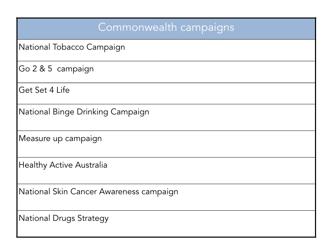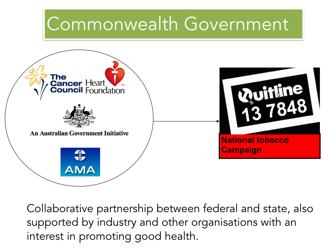Some key commonwealth campaigns include the national tobacco campaign, the national binge drinking campaign, and the national drug strategy, amongst many others. The commonwealth government works with many agencies, such as state governments, local governments, non-government organisations, and other industry groups to create effective health promotion campaigns. For example, the national tobacco campaign involves the commonwealth government working in close consultation with the Cancer Council, Heart Foundation, and the Australian Medical Association.